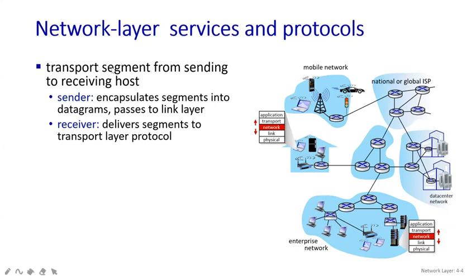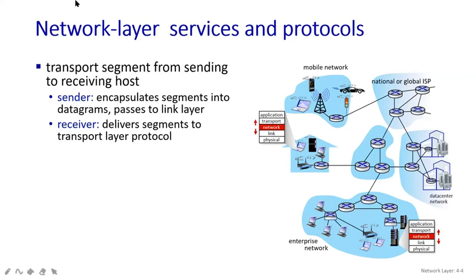Let's see what the network layer is. We have already completed two modules - the application layer and the transport layer. Now we are in the network layer, which is the third layer of our OSI model. The first point is that it transports segments from the sending host to the receiving host. The network layer is going to work with the segments, and we are going to send packets from the sender side to the receiver side.